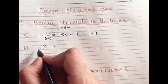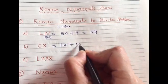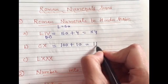C is century which is 100 and X is 10. So the whole number will be 110.